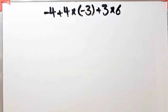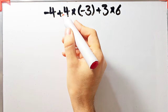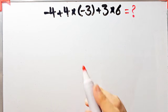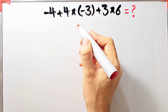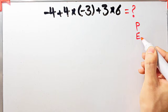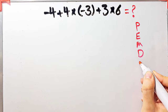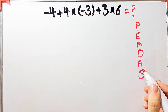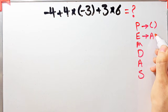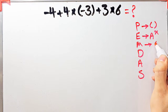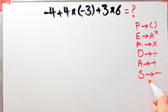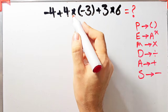Let's solve another question about the PEMDAS rule: negative 4 plus 4 times negative 3, plus 3 times 6. What is the answer? In this question we have addition and multiplication. To solve it we follow PEMDAS: P for Parentheses, E for Exponent, M for Multiplication, D for Division, A for Addition, S for Subtraction.